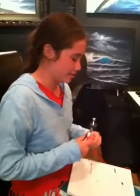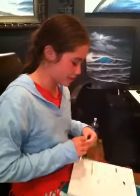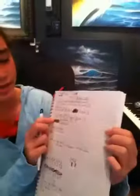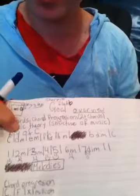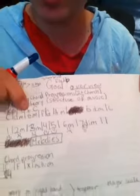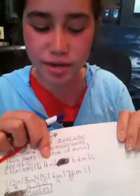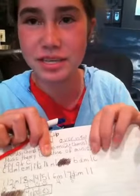There are eight chords in the key of C: C major, D minor, E minor, F, G, A minor, B diminished, and C.